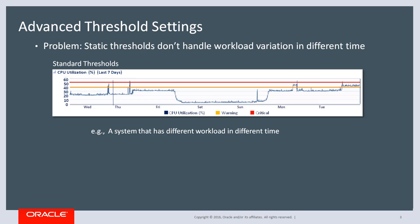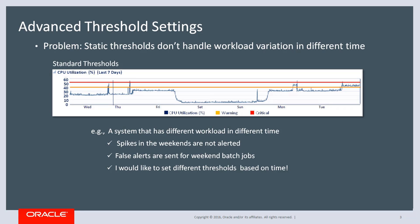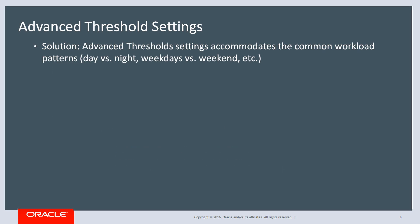So if you have a system that has different workloads at different times, you may miss a spike in the weekend. Or you may want to run batch jobs in the weekend to better utilize your resources, in which case you may get false alerts. So what you need is an ability to set different thresholds based on time that reflects different workloads. And the solution is to use advanced thresholds.